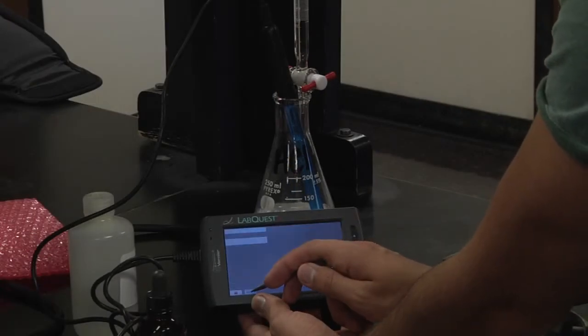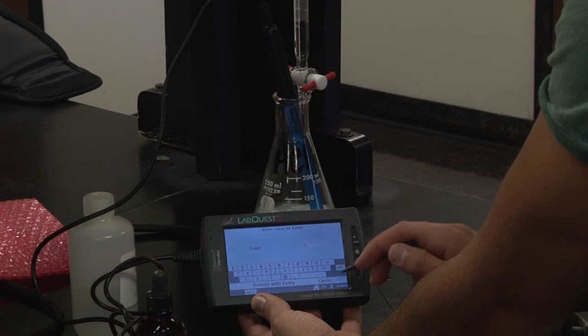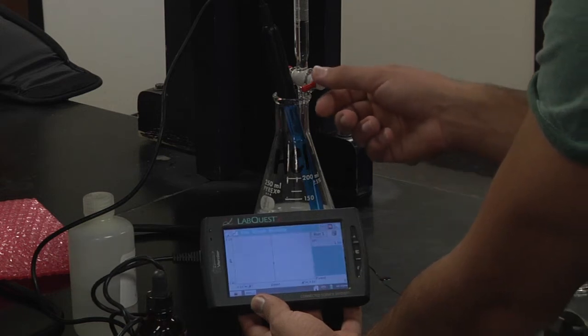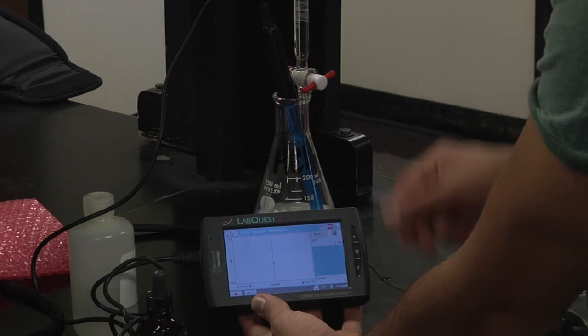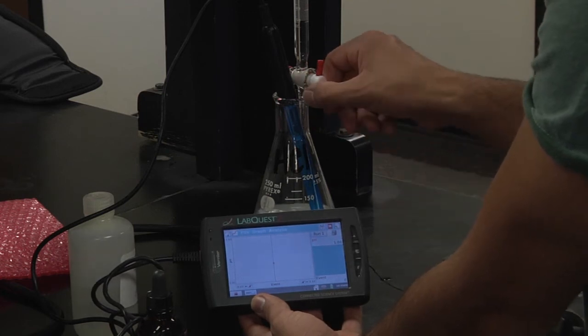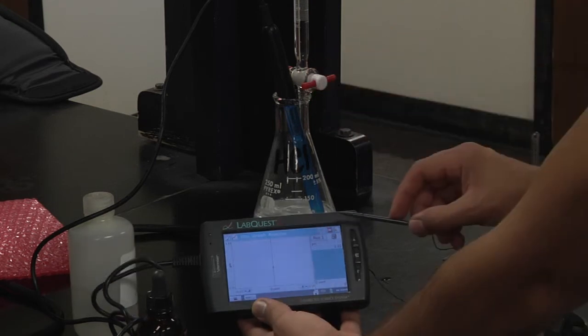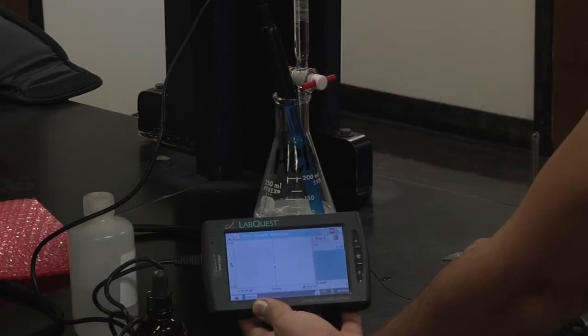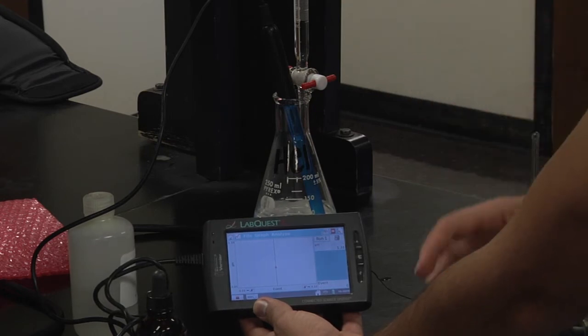Okay so remember we're going to press keep and tell it that we've added 0 milliliters to begin with. Now we're going to go ahead and add two milliliters. Notice our pH right now is at about one as we add some base. So you'll notice that our pH does not change even after adding a fair amount of sodium hydroxide.